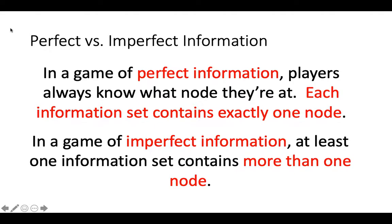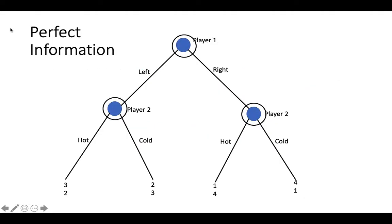Now that we know what an information set is, we have another way to tell the difference between games of perfect information and games of imperfect information. In games of perfect information, all players know where they are in the game — each node is in its own information set. In a game of imperfect information, there is always at least one information set that contains more than one node. We could illustrate games of perfect information by drawing information sets around each individual node, but usually we don't bother because it is redundant.